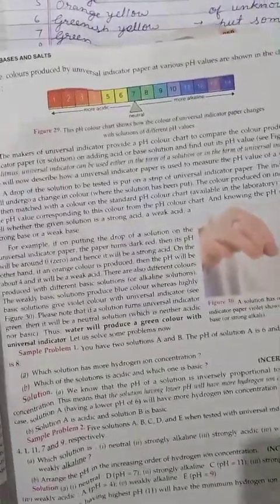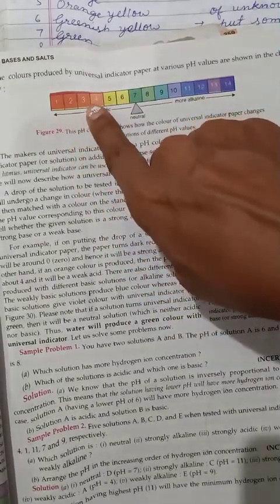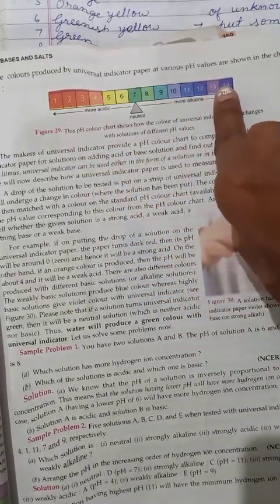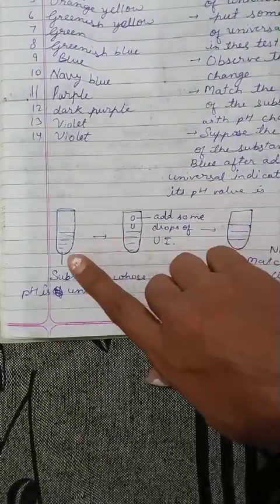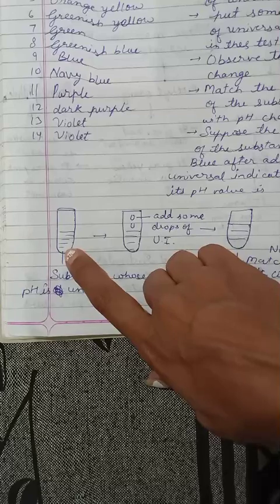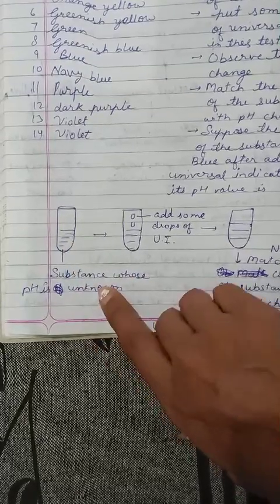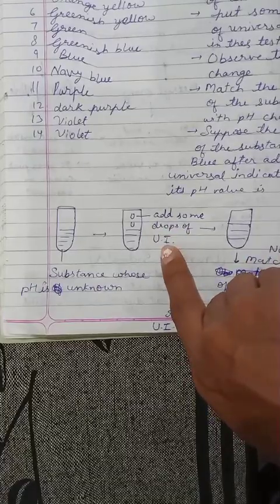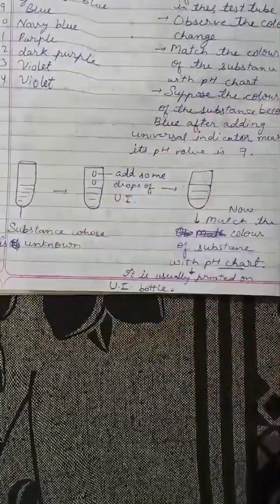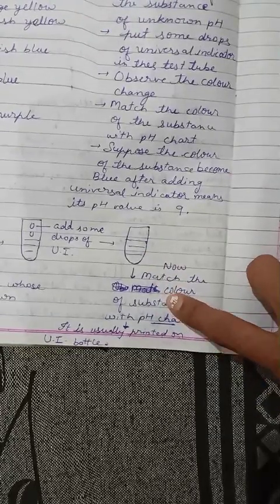You can see the pH chart by color. Let us see the colors at different pH values of the universal indicator in this solution. Now the color of that solution will change, and we match that particular color with the pH chart. Suppose the color is a certain shade — the pH is 11. Suppose the color is another shade — the pH is 5.